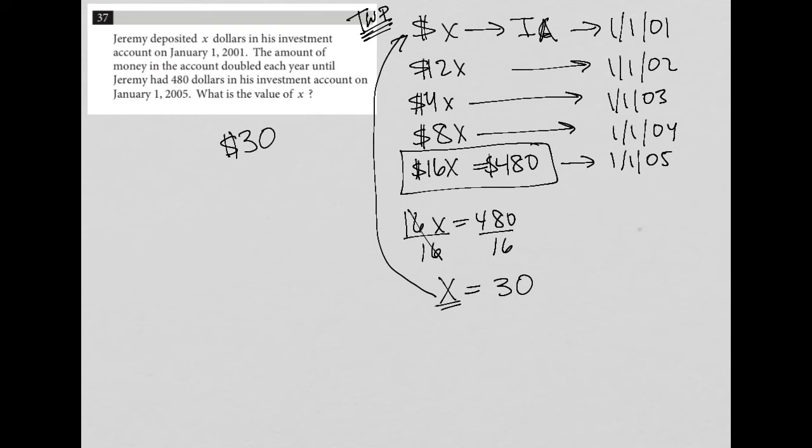And if I wanted to just check to make sure, I can say, well, if there were $30 invested in 2001, then those $30, since the account is doubling each year, will turn into $60 the next year.